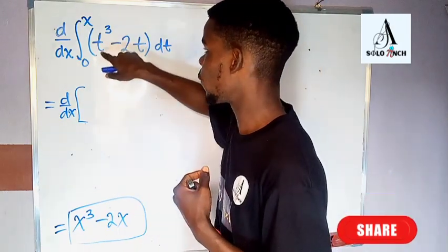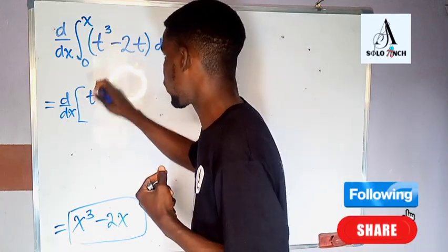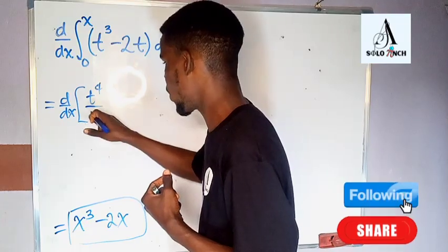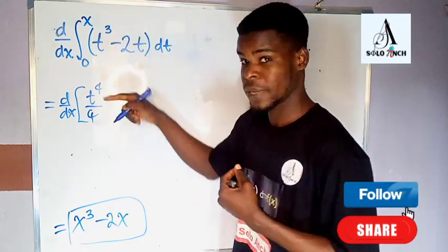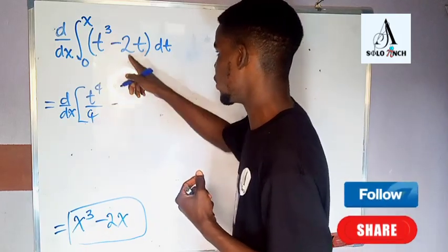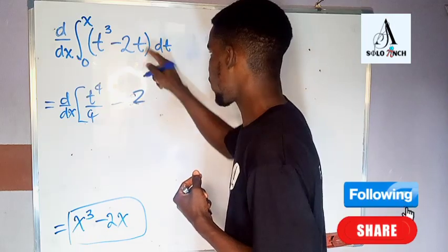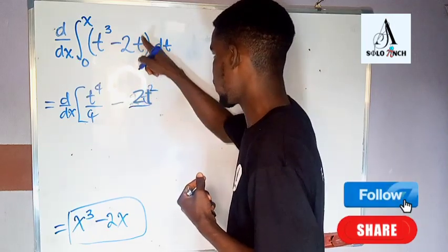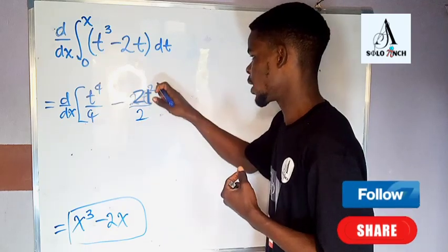The integral of t to the power of 3 with respect to t — you add 1 to the power, giving t to the power of 4 divided by the new power, which is 4. That's by using the inverse power rule. Similarly, since 2t is also a power function, you add 1 to the power, giving t to the power of 2. The 2 in the numerator and the new power of 2 cancel each other out.